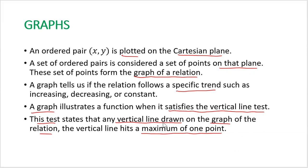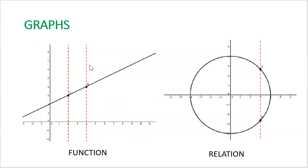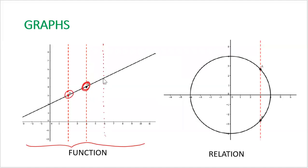For example, the first graph is a straight line. If we draw a vertical line anywhere on it, it hits only one point — so this graph is a function. For the second graph, which is a circle, drawing a vertical line hits two points, which is more than one. This means the circle graph represents only a relation.